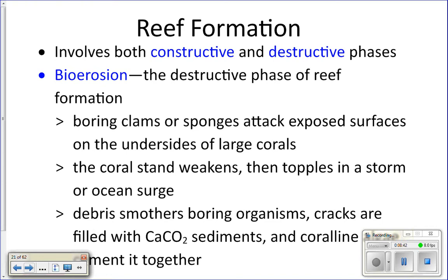In bioerosion, a coral grows up into a nice colony, but you get boring organisms — not boring like dull, but organisms that burrow into things — like boring sponges, clams, and worms, that actually burrow into the base of the coral colony. They create little holes that weaken the base, so when a storm comes, that coral colony is weakened and falls over.